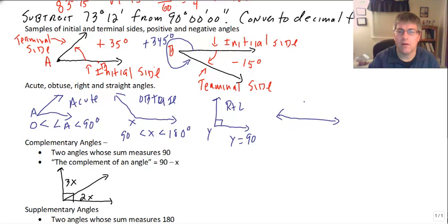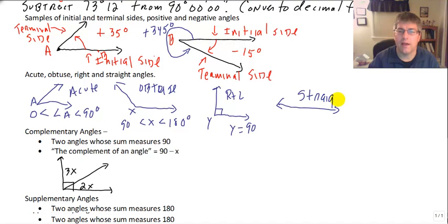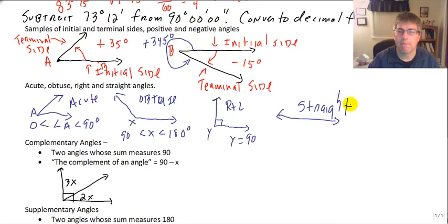A straight angle is exactly like it says, it is a straight line. Angle YXZ is going to be exactly 180 degrees.